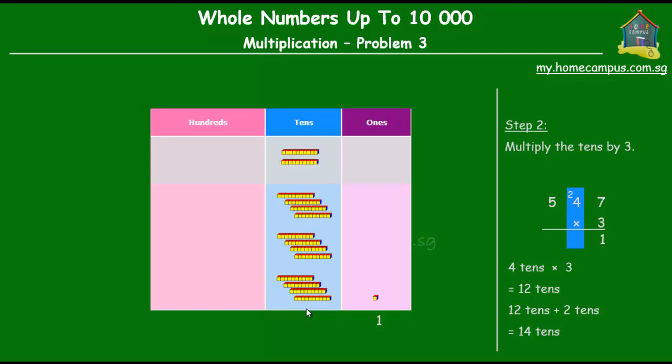12 tens plus 2 tens is 14 tens. Now, 14 tens obviously need to be regrouped and we regroup them into 10 tens and 4 tens or 100 and 4 tens, because 10 tens is 100. Let's go back to the working here. 4 tens times 3 is equal to 12 tens. To that we add these 2 tens and we get 14 tens. 14 tens is equal to 100 and 4 tens.